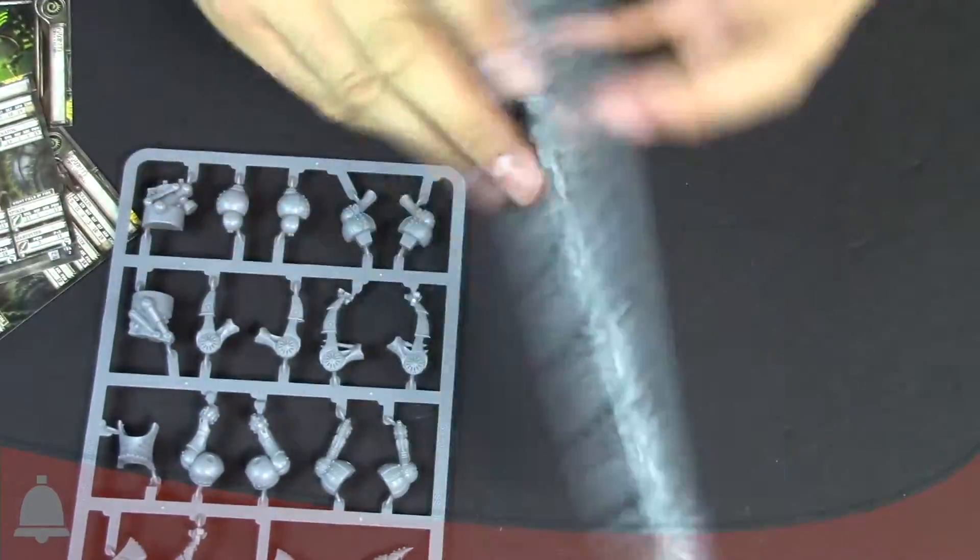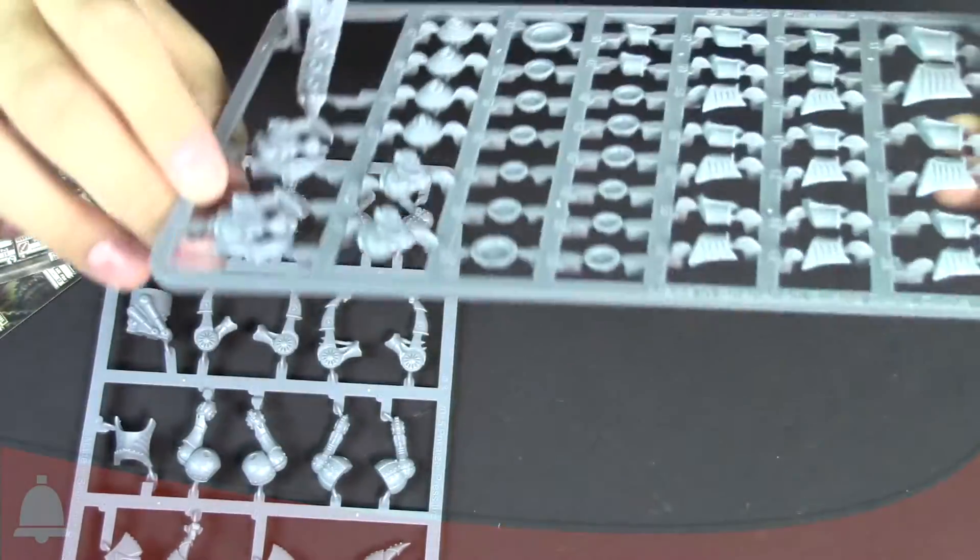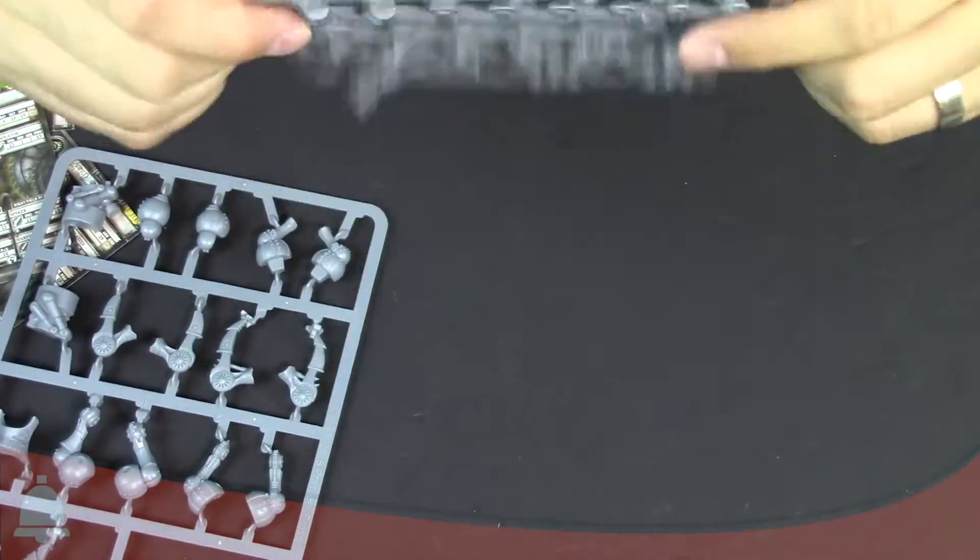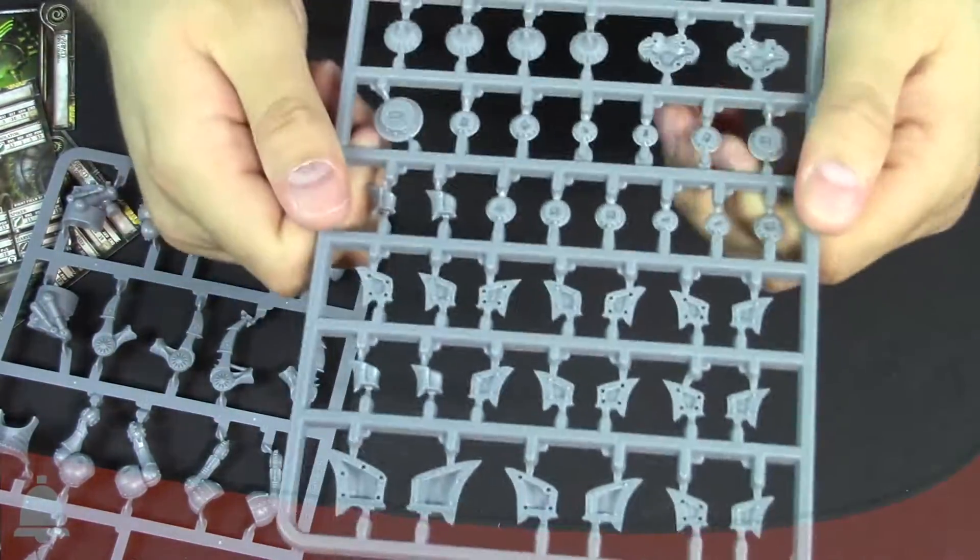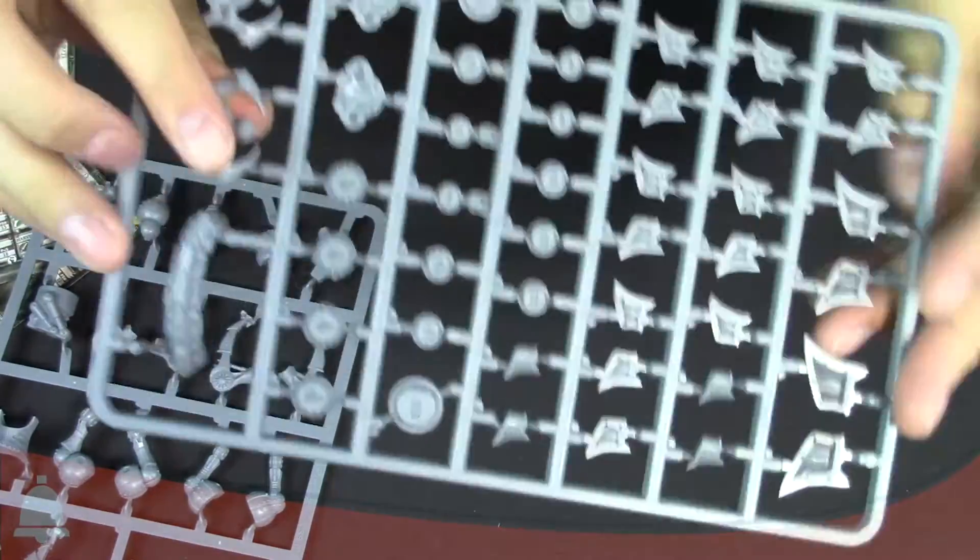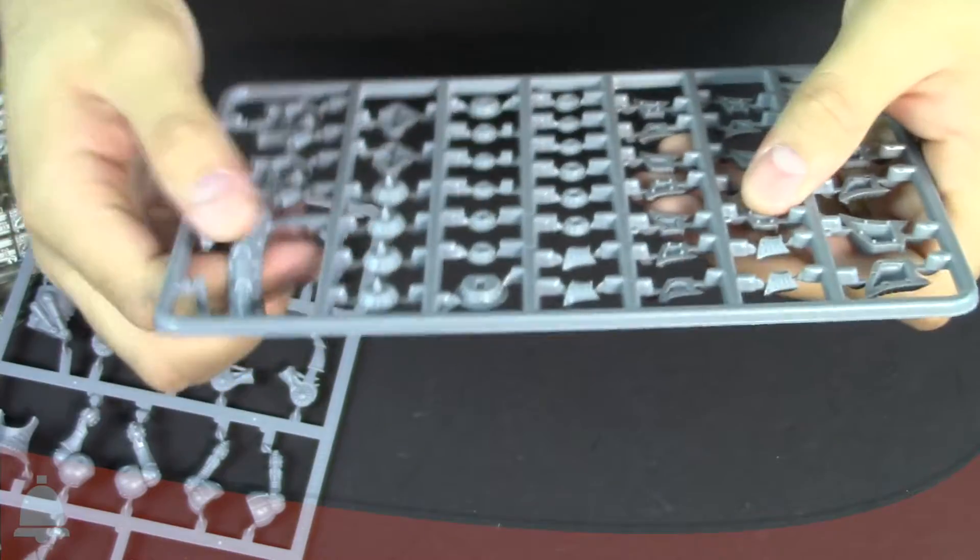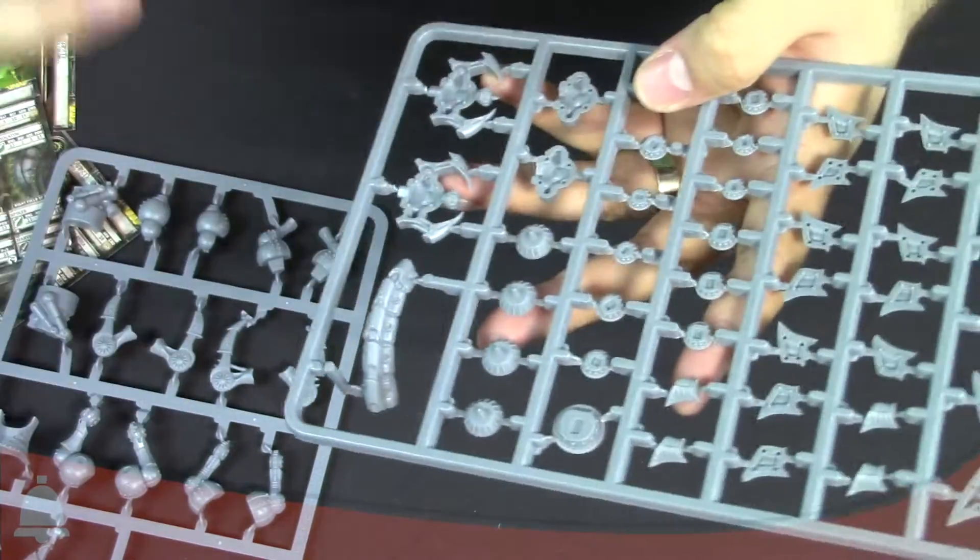But you can see all the different joints and stuff like that. Again, this kit didn't lose any detail in my opinion going to plastic. If anything it gained some lightness. And this is a hard plastic, it's bendy but it's still rigid. So it's a good base material to work with.